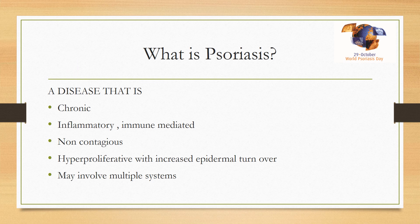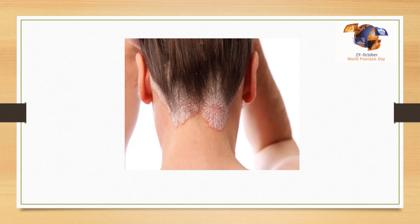What is psoriasis? It is a disease that is chronic, with remissions and relapses going throughout its course, and it is inflammatory, immune-mediated, but not truly autoimmune, non-contagious in nature, and hyper-proliferative skin disease with increased epidermal turnover. It is primarily considered a skin disease, but it may involve multiple systems in the body.